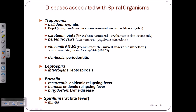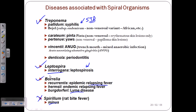Diseases associated with spirochetes: Treponema pallidum causes syphilis, a dangerous STD. Leptospira interrogans causes leptospirosis. Borrelia burgdorferi causes Lyme disease in humans, and Borrelia recurrentis causes epidemic relapsing fever. Spirillum can cause rat-bite fever-like symptoms. We will cover Treponema, Leptospira, and Borrelia in separate videos. I hope this gives a basic idea — thank you.